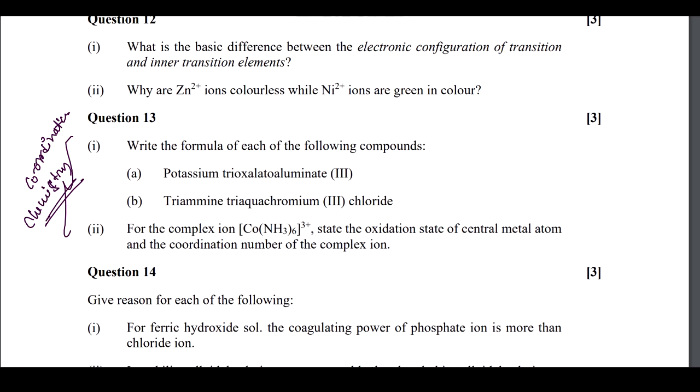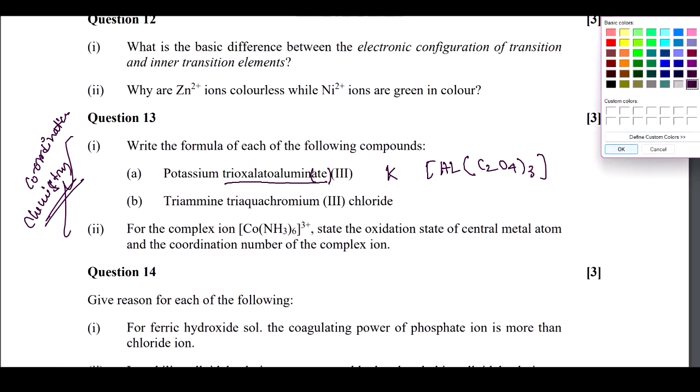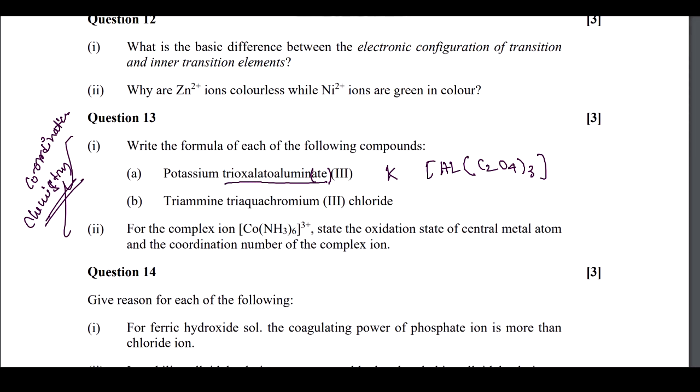Write the formula: potassium trioxalate aluminate. Here aluminate has -ate, meaning the coordination sphere is negative. The formula will be K, then aluminum C2O4 whole thrice. Oxalate means 2 minus for each ligand. Three ligands means aluminum is in plus 3 oxidation state. Three oxalate means minus 6, so it becomes minus 3. The charge of coordination sphere is minus 3. To neutralize, we need 3 K positive. So K3 that will be the formula.